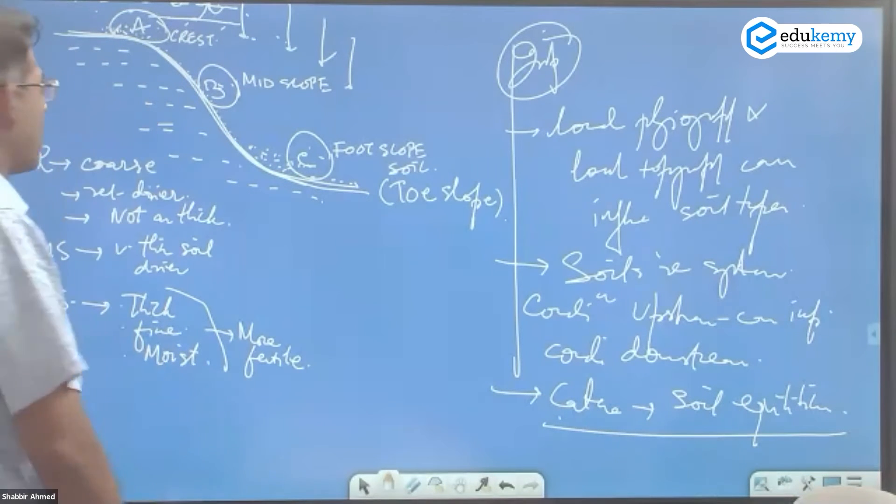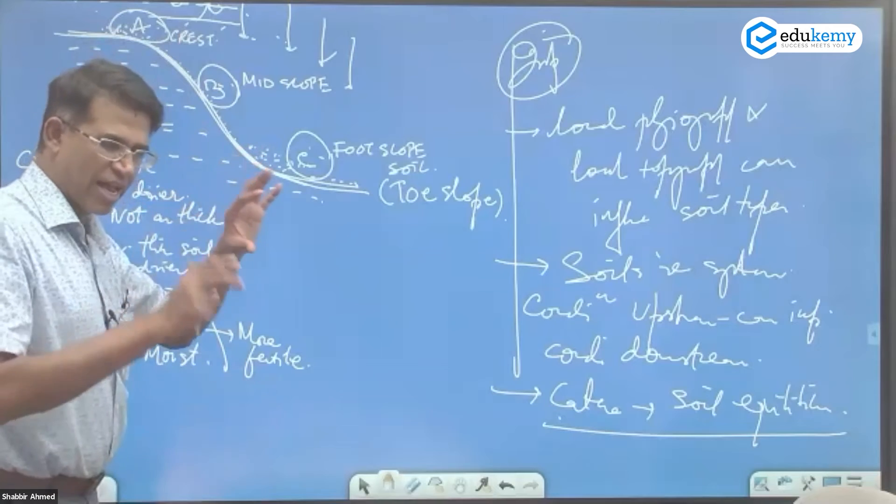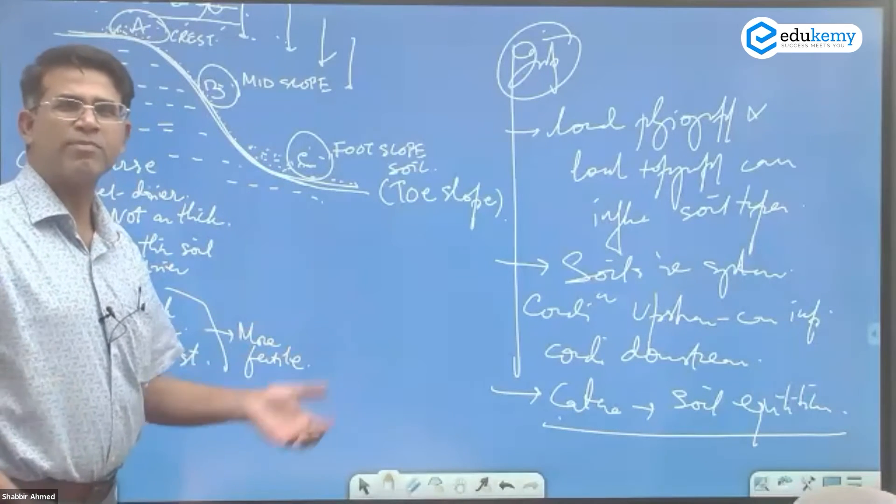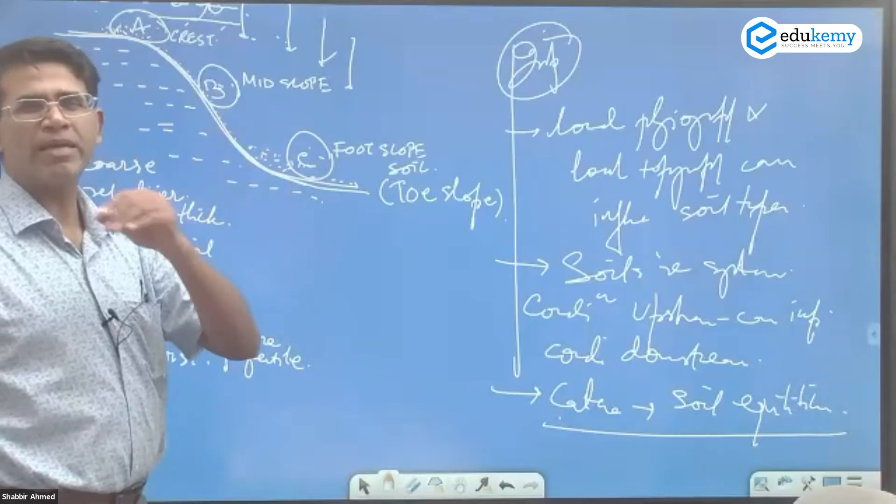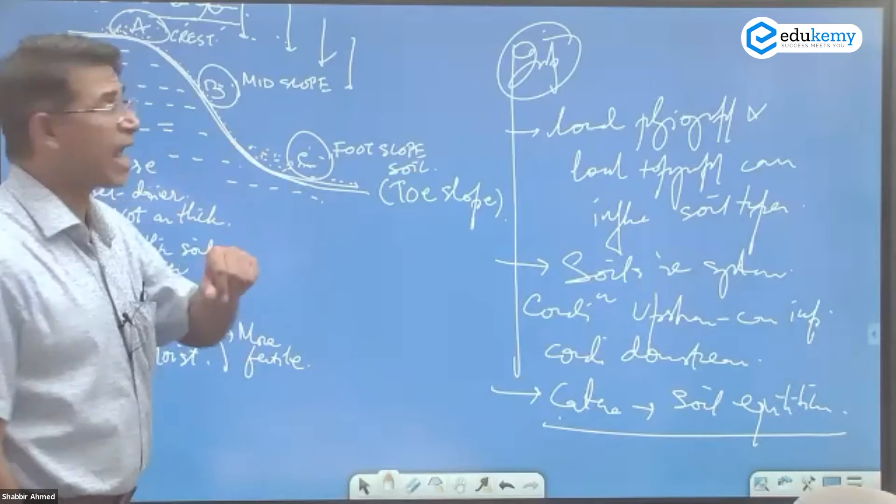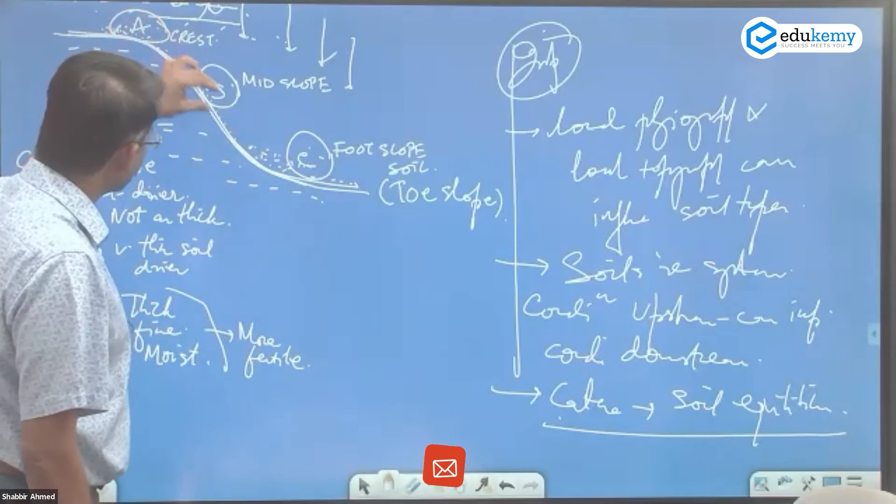So don't bring slope decline here. I'm talking about a relatively shorter time, couple of decades maybe. 10, 15, 20 years maybe. In that type of a time scale, you have the catena developing.